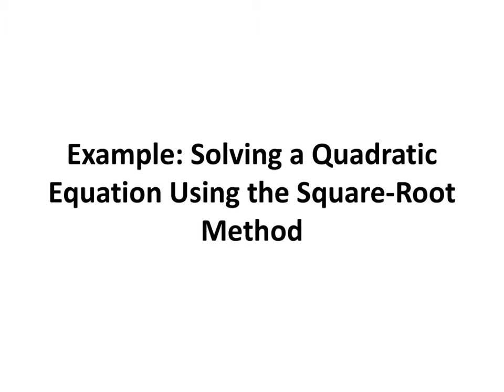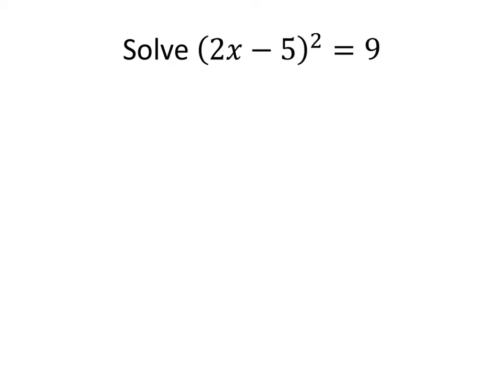In this video, we learn about another method to solve quadratic equations. If we have a quadratic equation that looks like this — 2x minus 5, quantity squared, equals 9 — the traditional way to solve this would be to multiply out the left-hand side, 2x minus 5 times 2x minus 5, multiply that all out, simplify, subtract 9 from both sides, and then either factor it or use the quadratic formula.